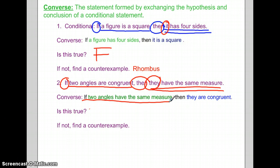Why is this statement true? Yes. We can't find a counter example, because we all know if two angles have the same measure, they are congruent. We just studied this in our last unit.